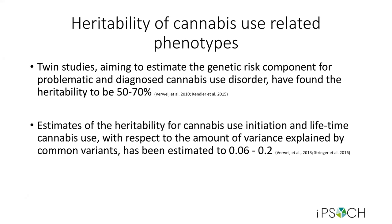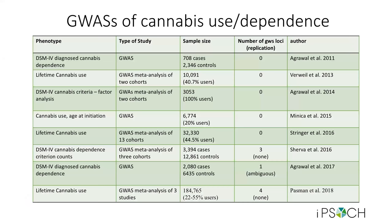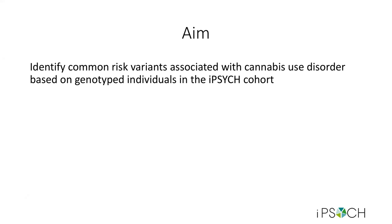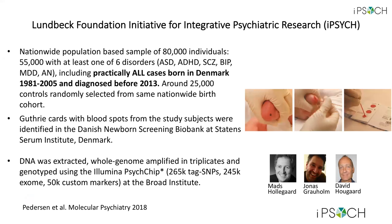Very recently, a GWAS of lifetime cannabis use based on more than 184,000 individuals was uploaded to BioArchive, where heritability was estimated at 10% — though that phenotype is quite different from the one we're analyzing here. Up to now, eight genome-wide association studies of cannabis use or cannabis-related phenotypes have been conducted, three with genome-wide significant findings. However, replication has been absent or ambiguous. The aim of this study was to identify common risk variants associated with cannabis use disorder using genotyped individuals in the iPSYCH cohort.